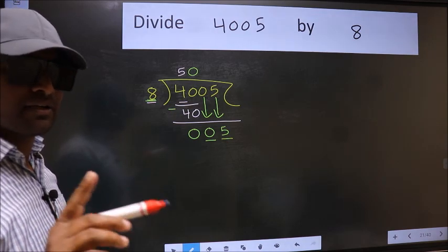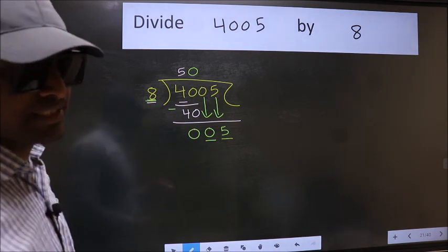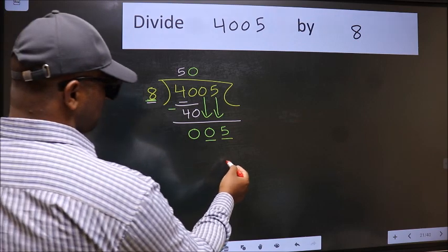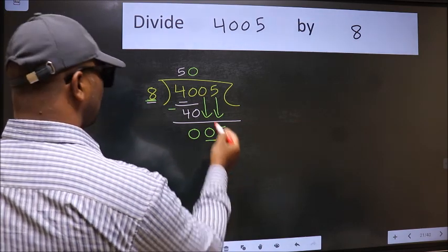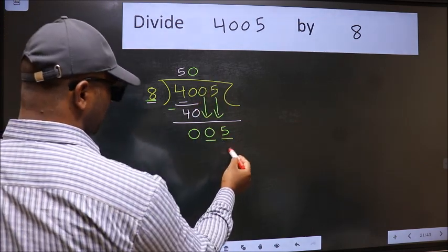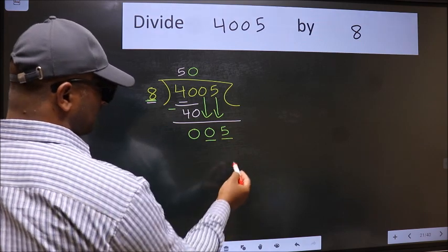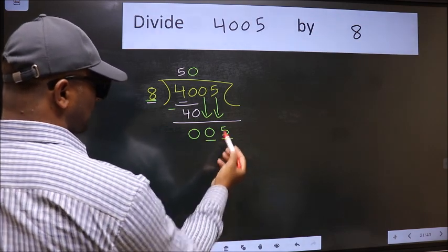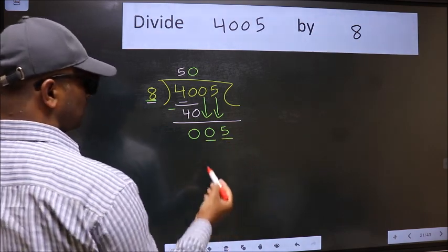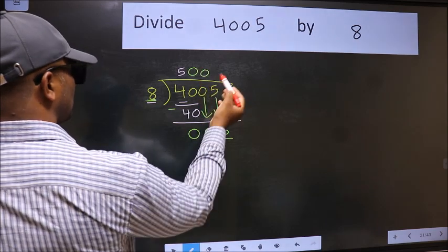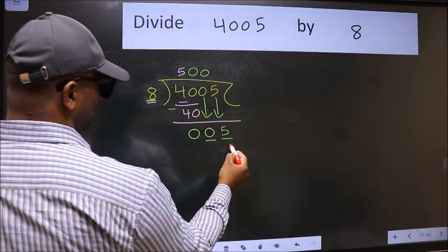Instead of that, what you should think of doing is which number should we take here? If I take 1, we will get 8. But 8 is larger than 5. So what we should do is we should take 0. So 8 into 0, 0.